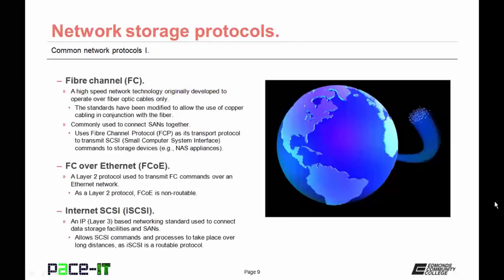We're going to start with fiber channel — a high-speed network technology originally developed to operate over fiber-optic cables only, though the standards have been modified to allow the use of copper cabling as well. It's commonly used to connect storage area networks together. Fiber channel uses fiber channel protocol, or FCP, as its transport layer protocol to transmit SCSI — that's Small Computer System Interface — commands to storage devices. It uses FCP to transmit SCSI commands to network-attached storage appliances.